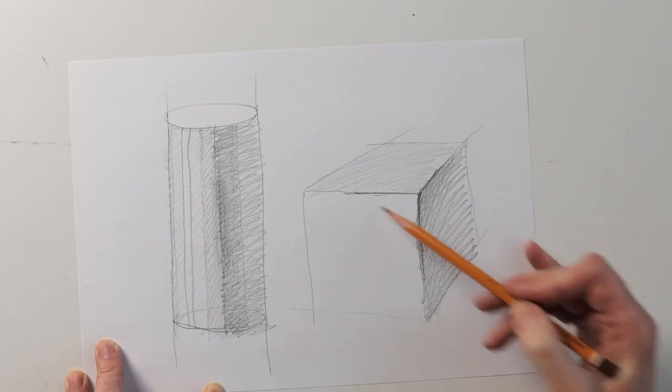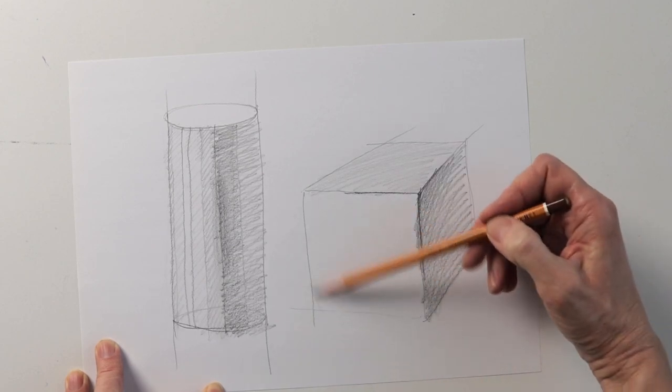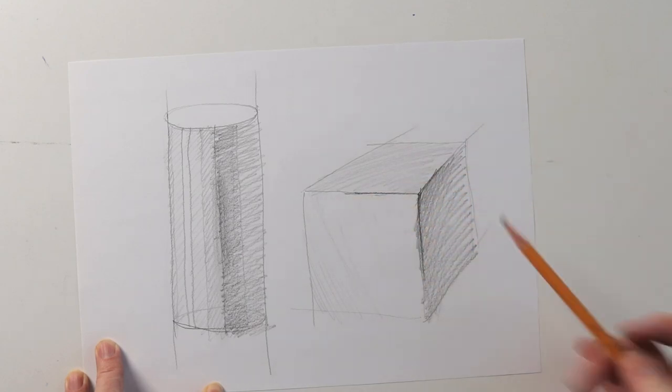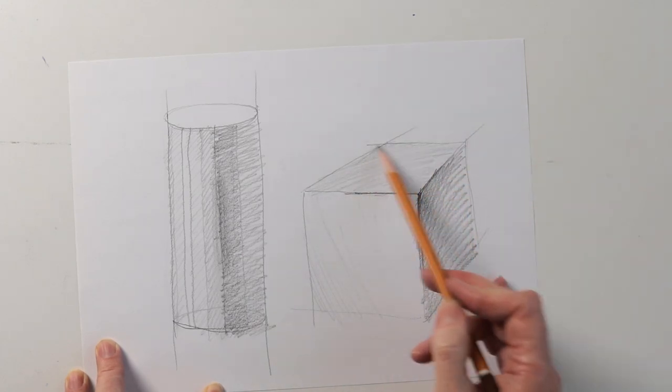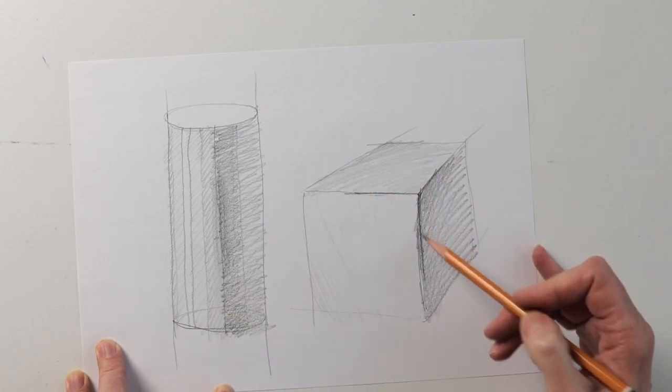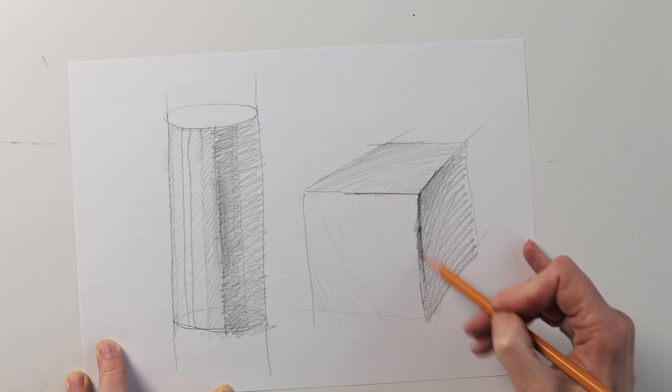This corner is the lightest. And I slightly darken the opposite corner. And I also darken the far corner a little bit in order to get it more distant. It turns out that each side of the cube has small gradations.